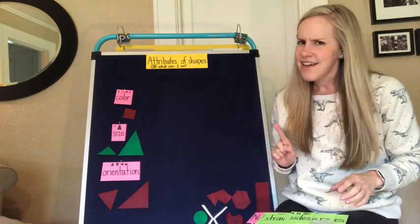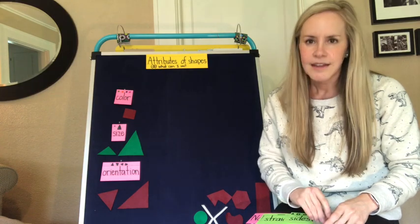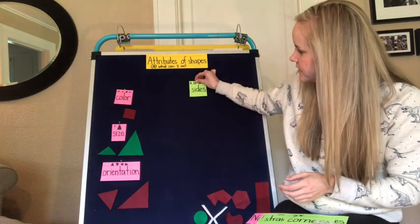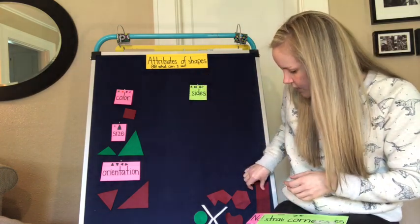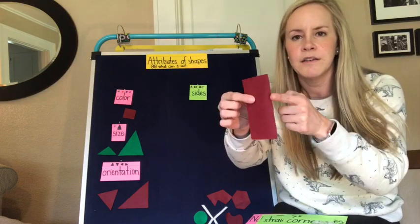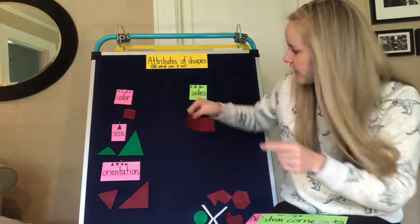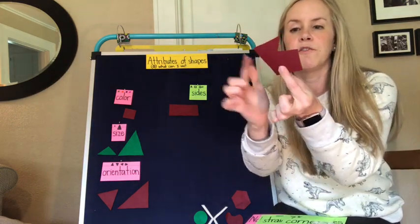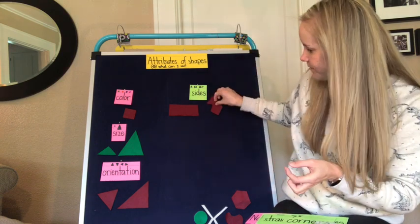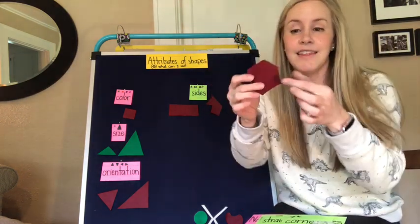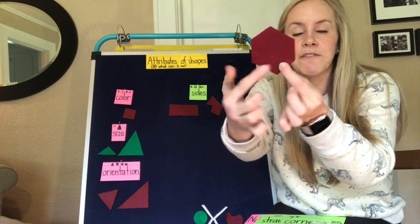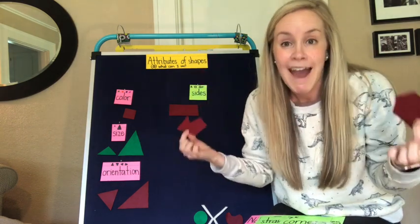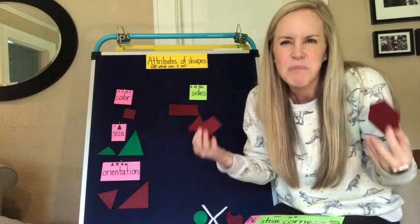Another attribute of a shape — something you can see about them — is how many sides the shape has. For instance, this shape has one, two, three, four sides. This shape has one, two, three, four, five, six sides, and this shape has one, two, three, four, five, six sides as well. These two shapes are really different, but one attribute they have in common is they both have six sides.